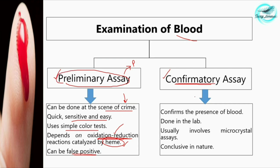The confirmatory assays confirm the presence of blood and are carried out in the lab using a microscope. They are also called microcrystal assays because microscopic crystals obtained from these tests serve as results confirming the presence of blood. These tests are conclusive in nature — they provide conclusive evidence that a particular stain is blood, which you can state with confirmation.